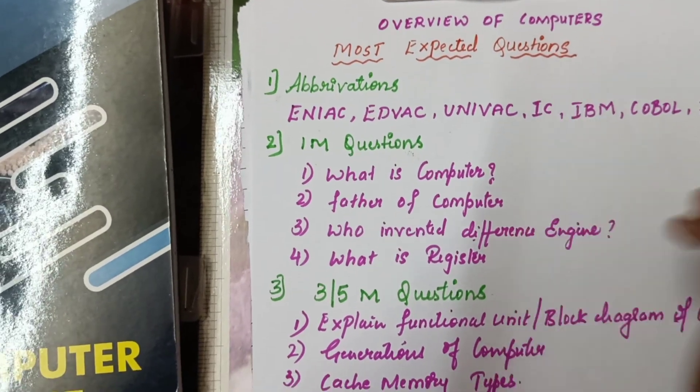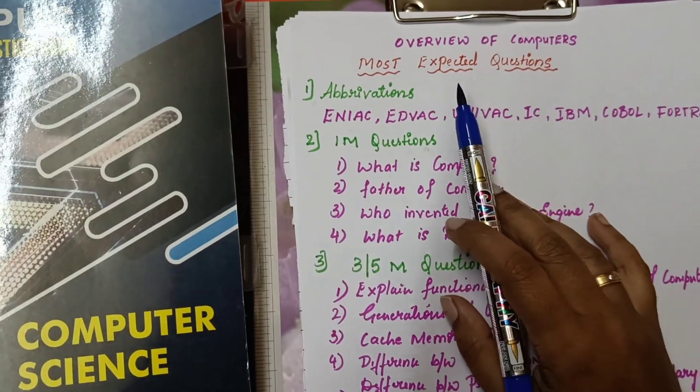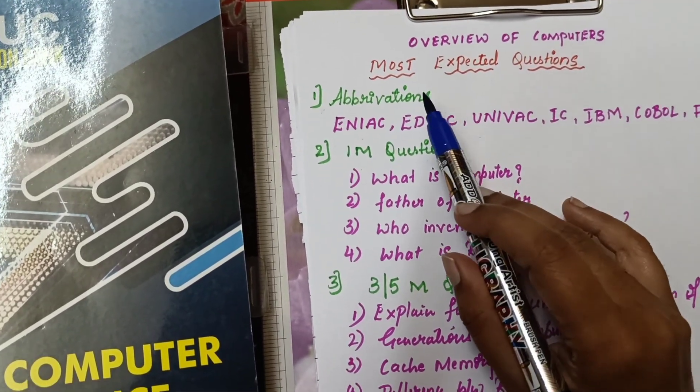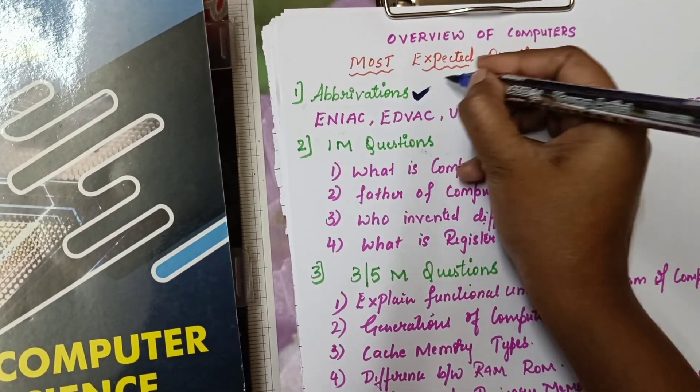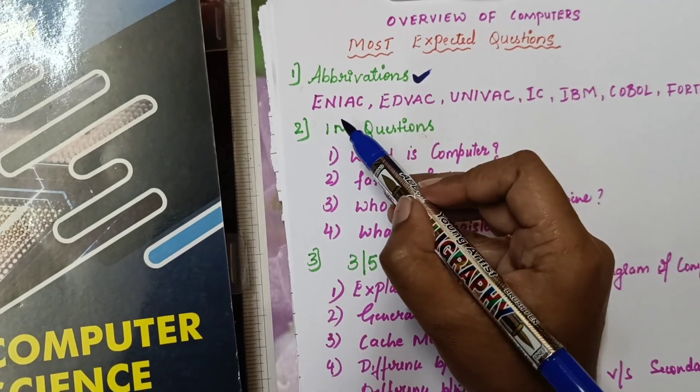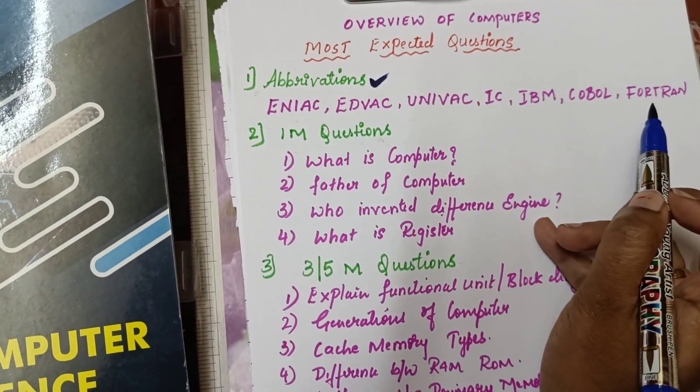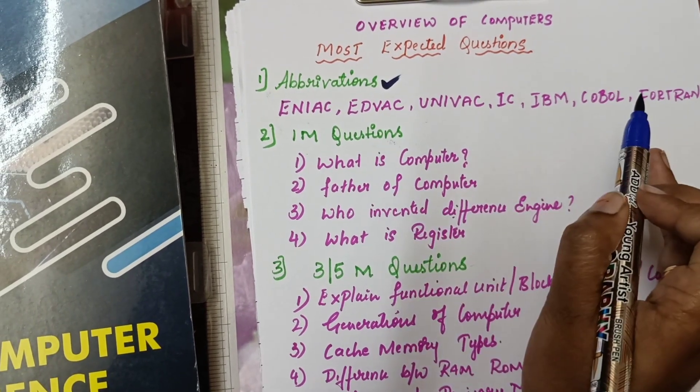Now let us move towards the important questions from Chapter 1. The most expected topics from the first chapter: I'm going to note all the abbreviations which come in the first chapter. These are repeated questions that appear in your MCQs or fill in the blanks, so go through them for your upcoming exam preparation.